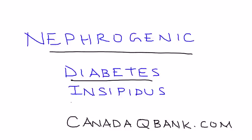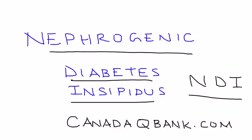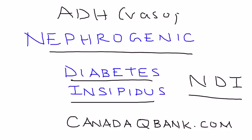Nephrogenic diabetes insipidus. This disorder involves a hormone known as ADH, also known as vasopressin. When we talk about this, it's very important to first talk about ADH and what ADH actually does. ADH is known as antidiuretic hormone.